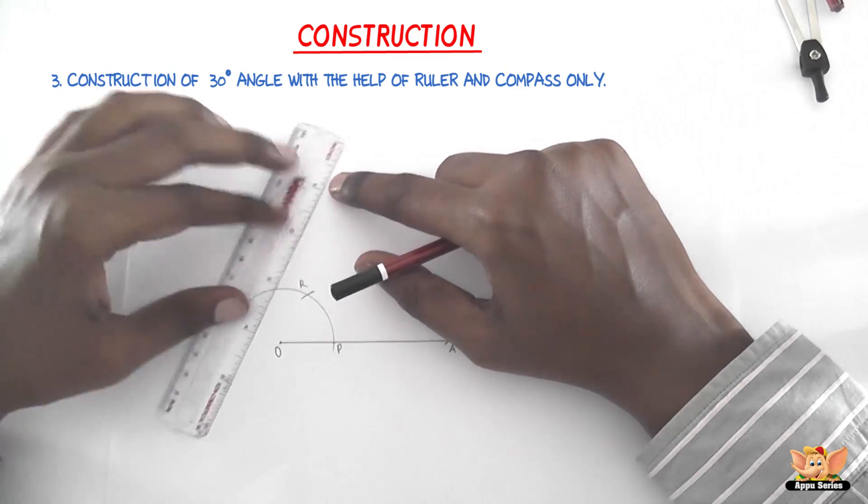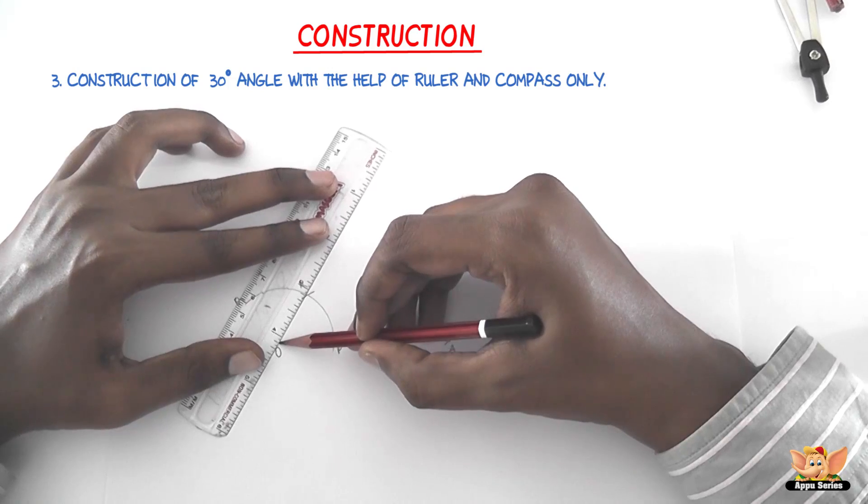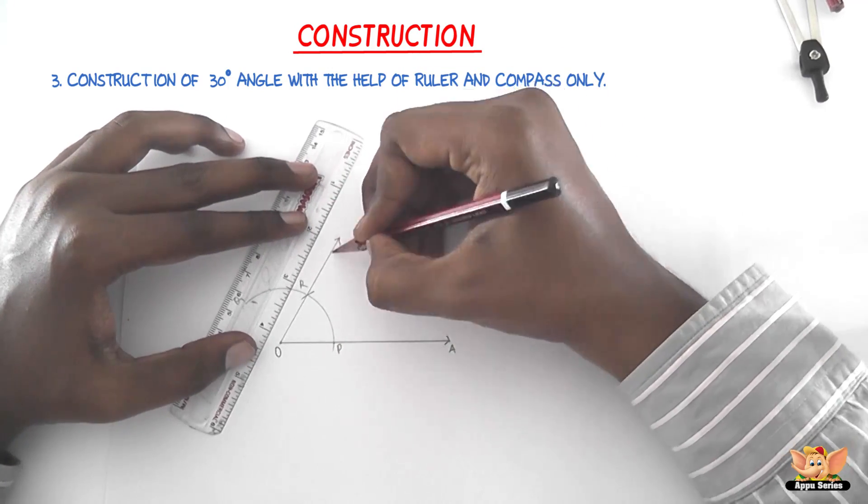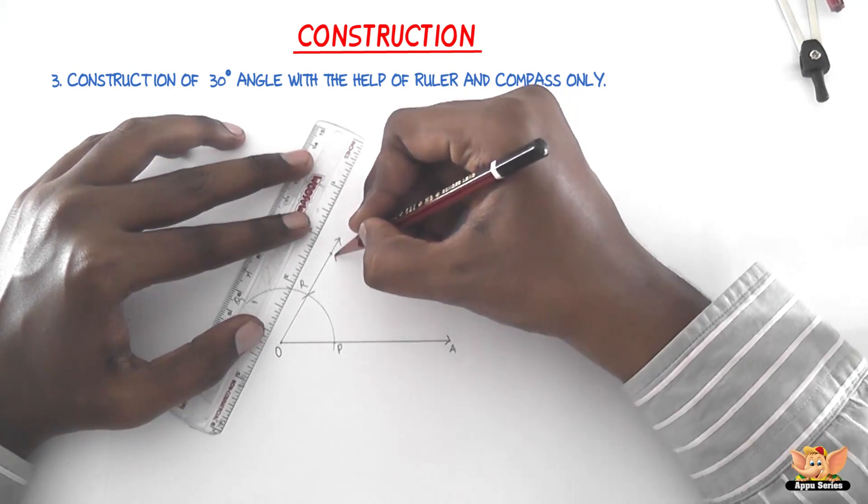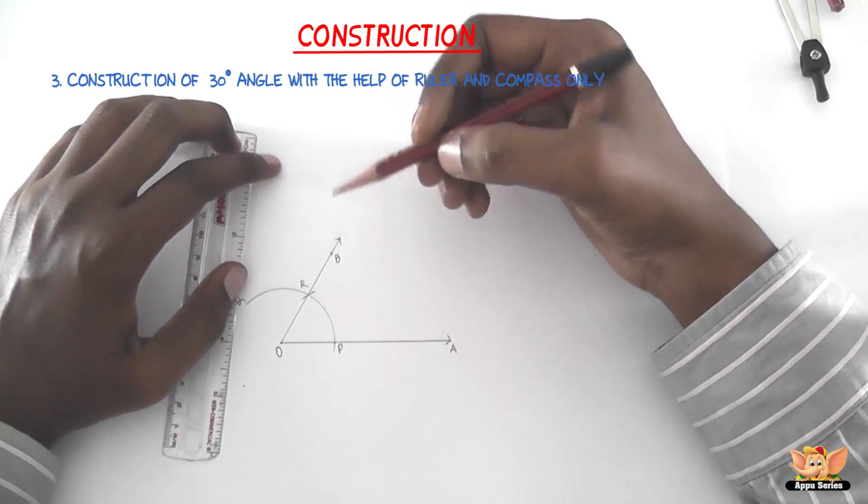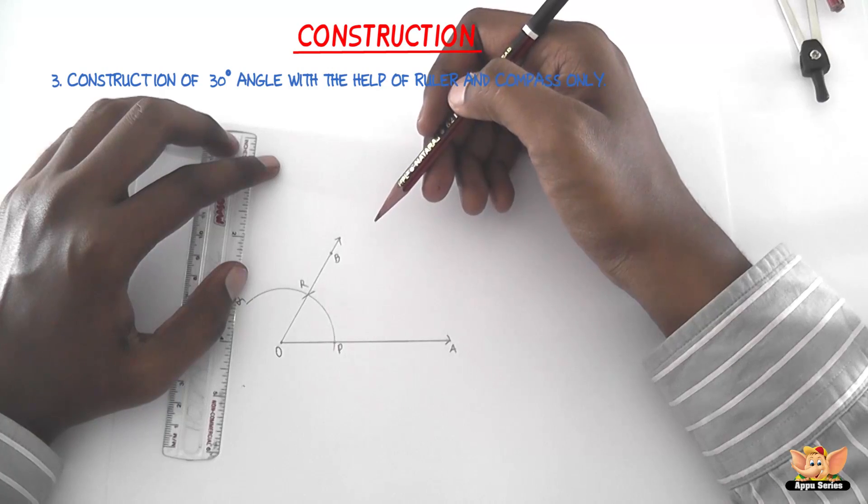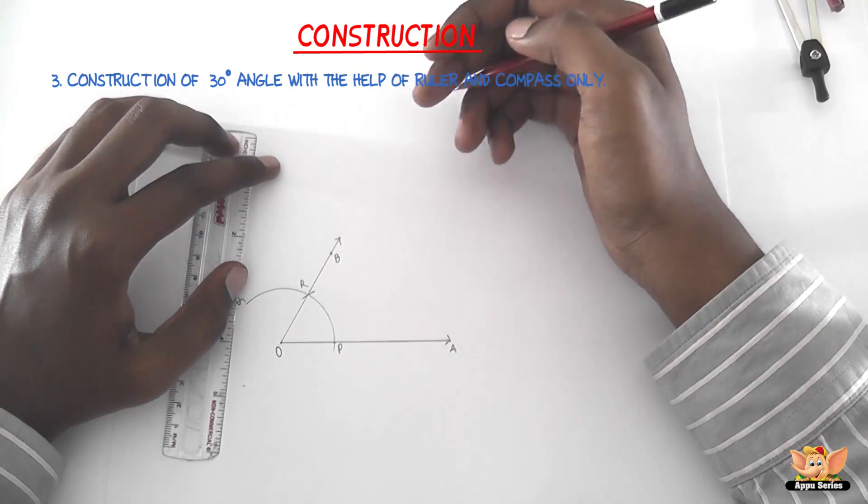Join the points O and R and produce it to meet at B. Just choose an arbitrary point on the line OR and write it as B. The angle AOB so obtained is a measure of 60 degrees. This is how we construct an angle of 60 degrees.